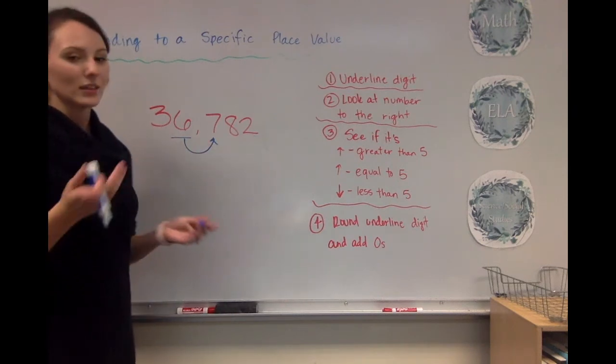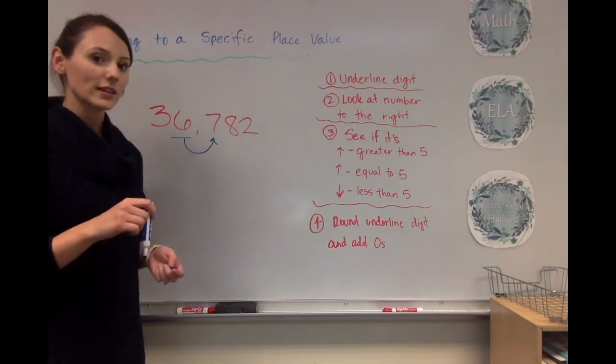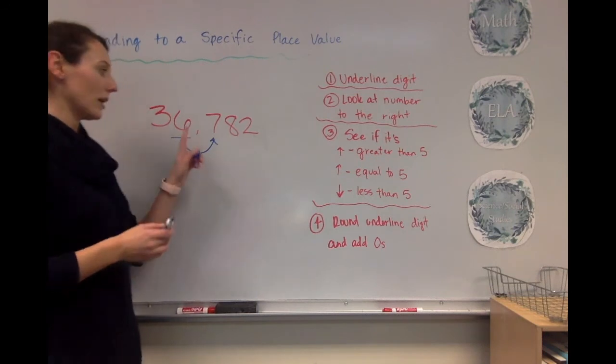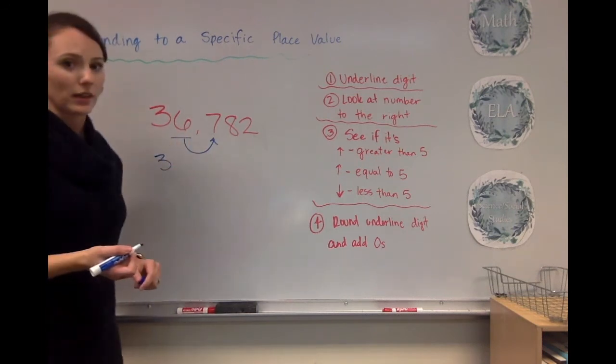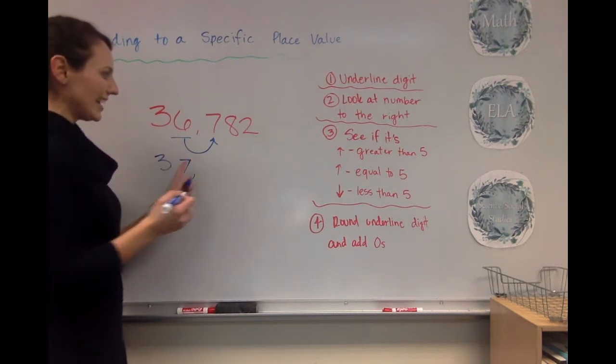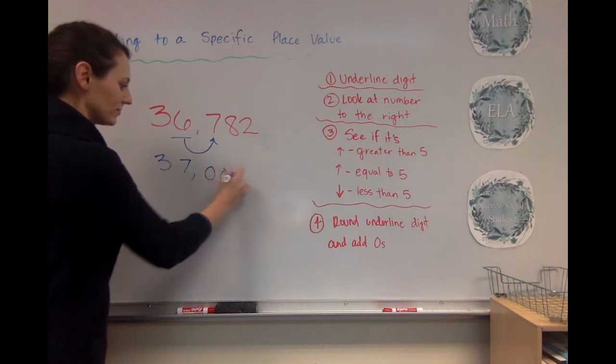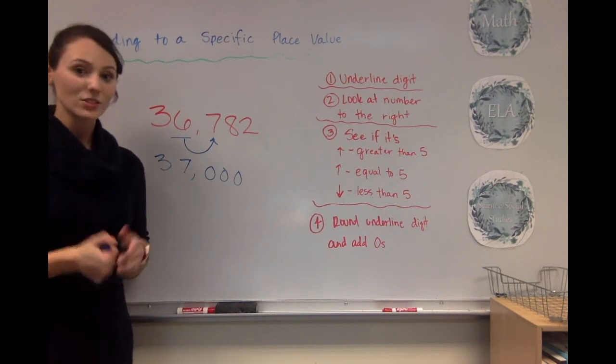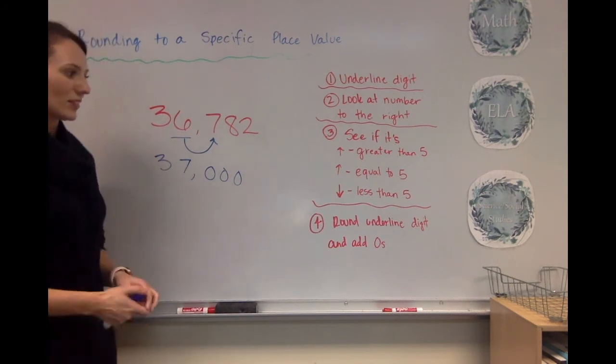Okay, so I look to the right, and I see the number 7. I want to see if that's greater than 5, equal to 5, or less than 5. 7 is greater than 5, so that means I'm going to round this digit up. So I keep my 3 the same. That's unaffected by this. I'm going to round 6 up to 7. And then the rest will be zeros. So 36,782 rounded to the thousands place is 37,000.